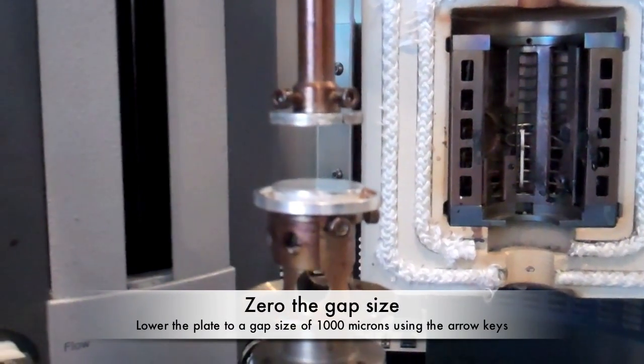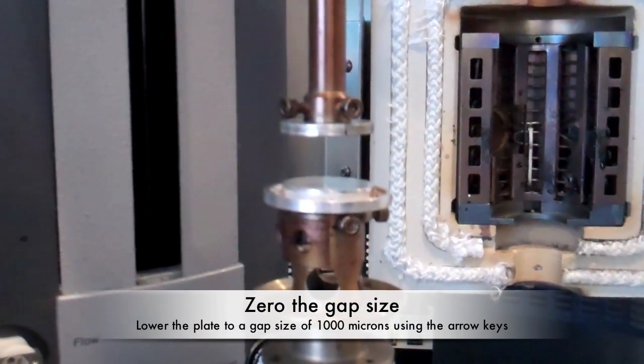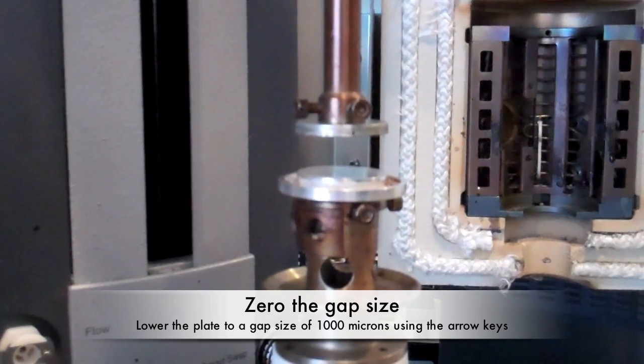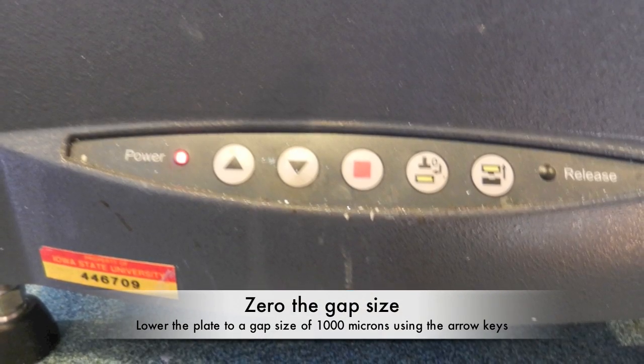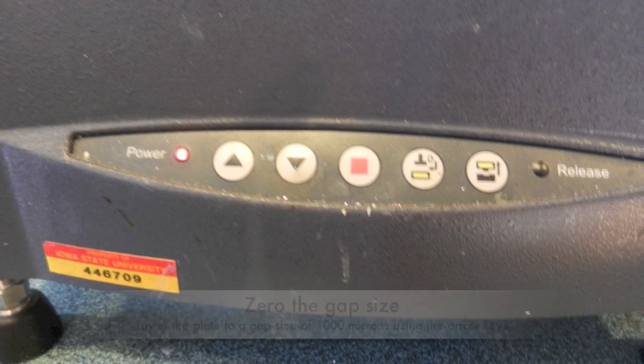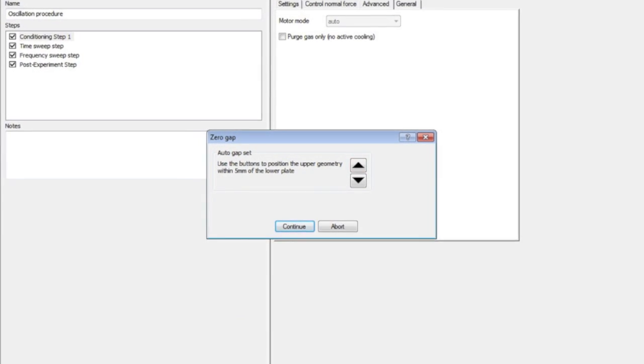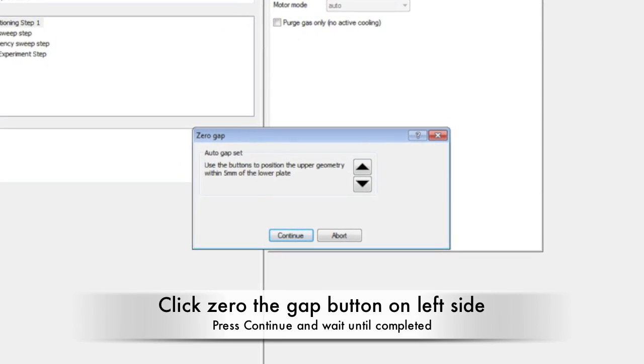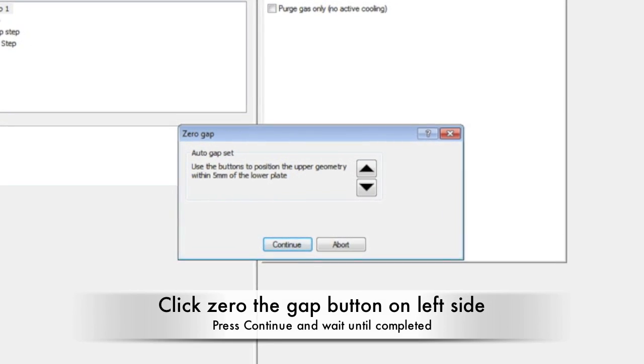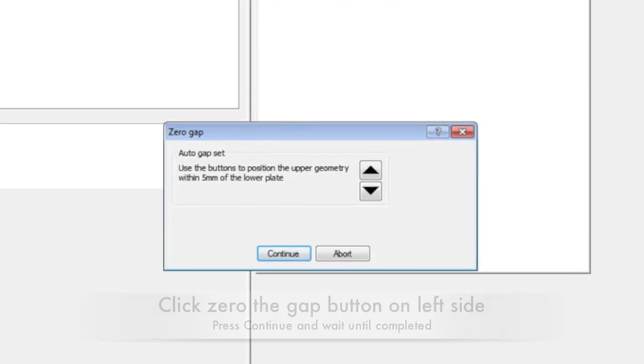It is important to zero the gap size for this type of experiment. To zero the gap between the plates, push the down arrow to lower the plates until the gap is about 1000 microns as indicated on the software. Click the Zero the Gap button on the software. Click Continue and wait until a message indicates that the gap has been zeroed, then raise the top plate.